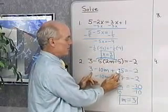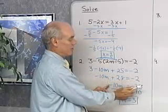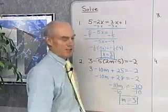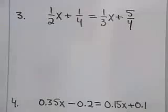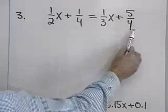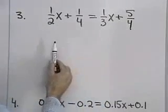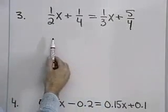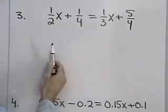I combine these two constant terms to get 28 before I add the same number to both sides and multiply or divide both sides by the same number. Let's look at a problem now that involves fractions: 1 half x plus 1 fourth equals 1 third x plus 5 fourths.